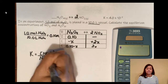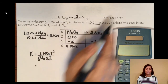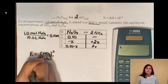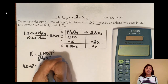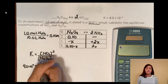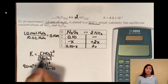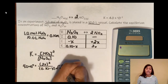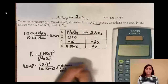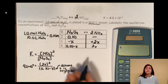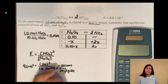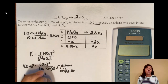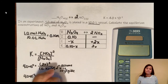Then we write the equilibrium expression — your AP reader is going to look for this. We plug in K = 4.0 × 10⁻⁷, set equal to (2x)² over (0.10 − x). Since the exponent of K is pretty small, we can assume X is negligible for the reactants — write that assumption down. This lets us drop the X in the denominator and avoid the quadratic equation. On the AP exam, if you find yourself doing the quadratic, you probably should have assumed X was negligible.